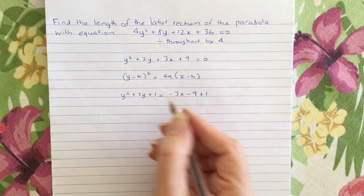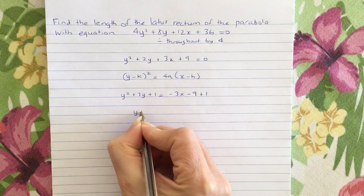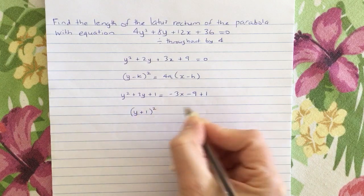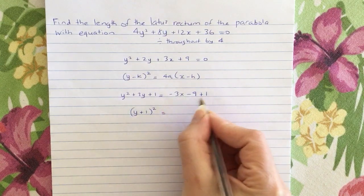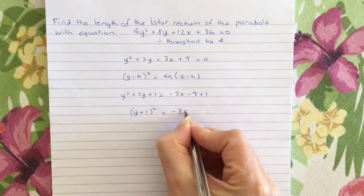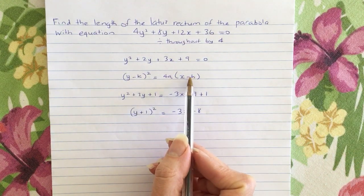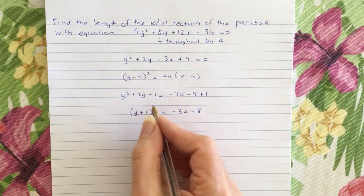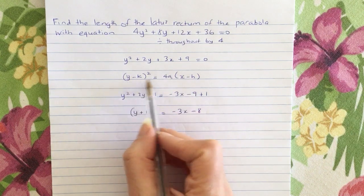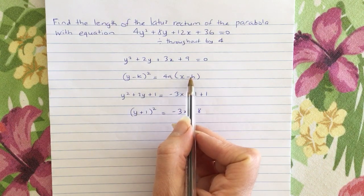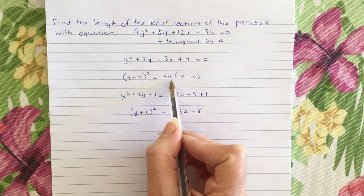This is a perfect square, which will factorize to (y + 1)². And on this side, just simplify: -3x - 8. We're getting closer to this form. So it's important that we get it in this form, because the length of the latus rectum happens to be 4a units.